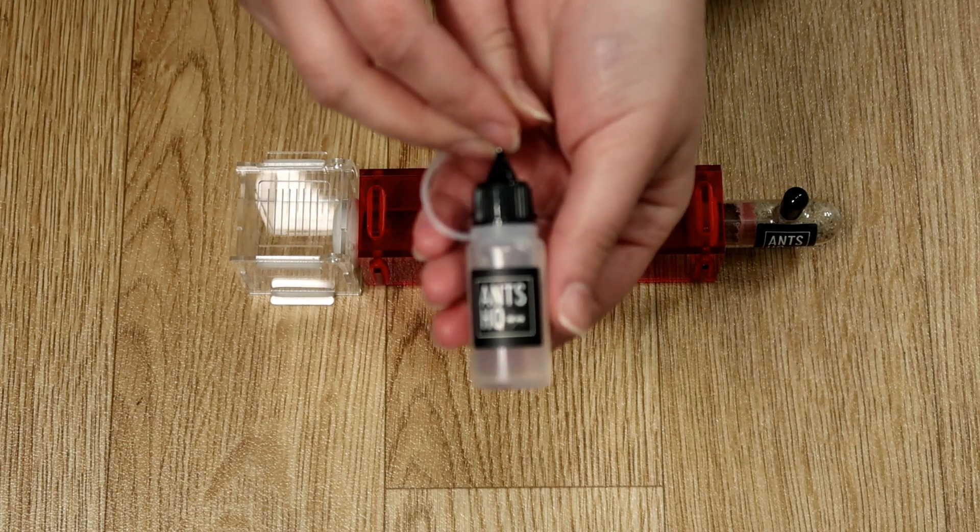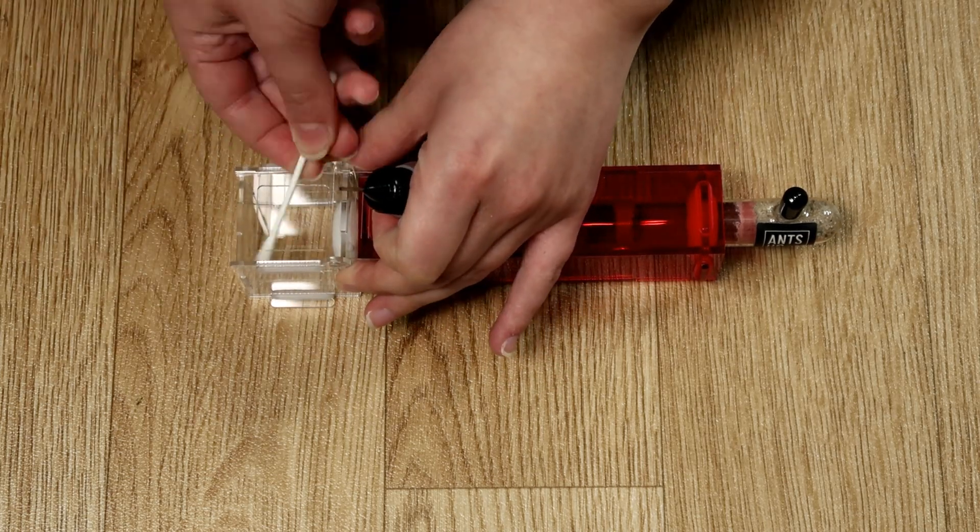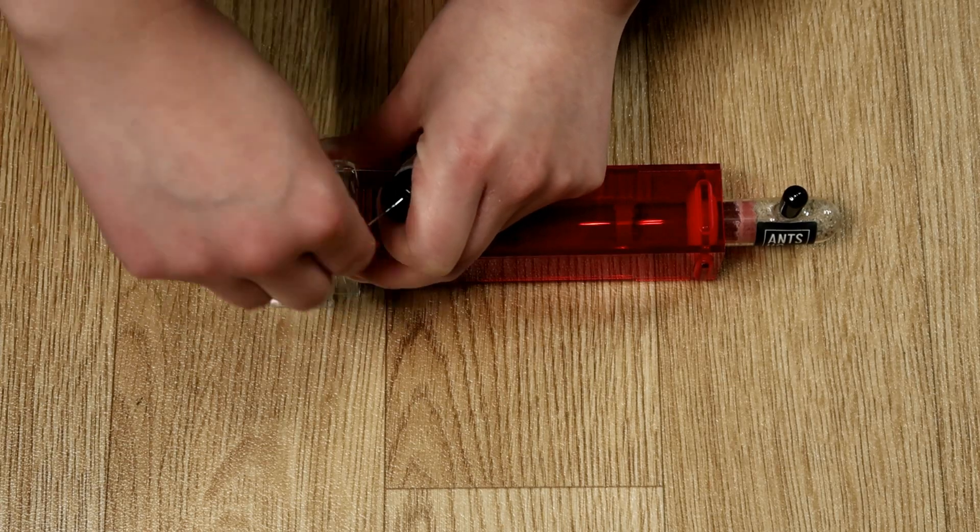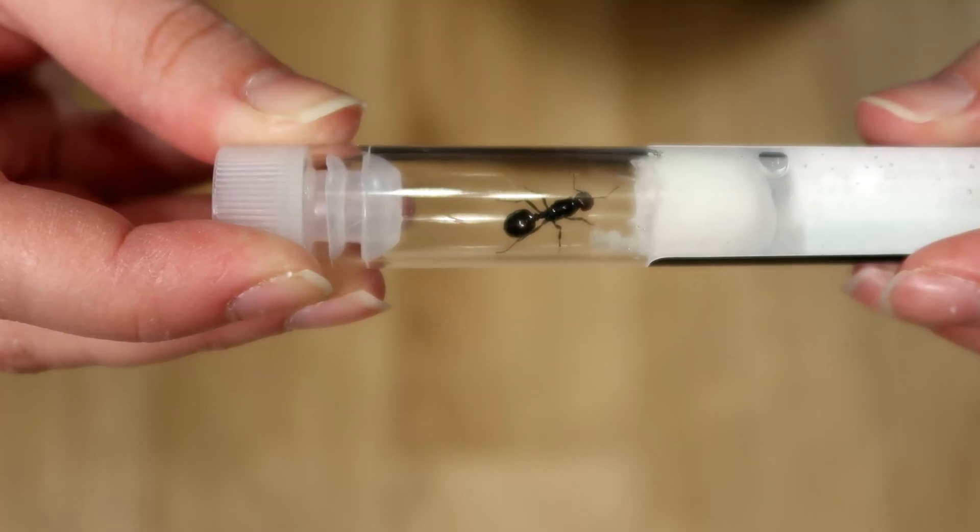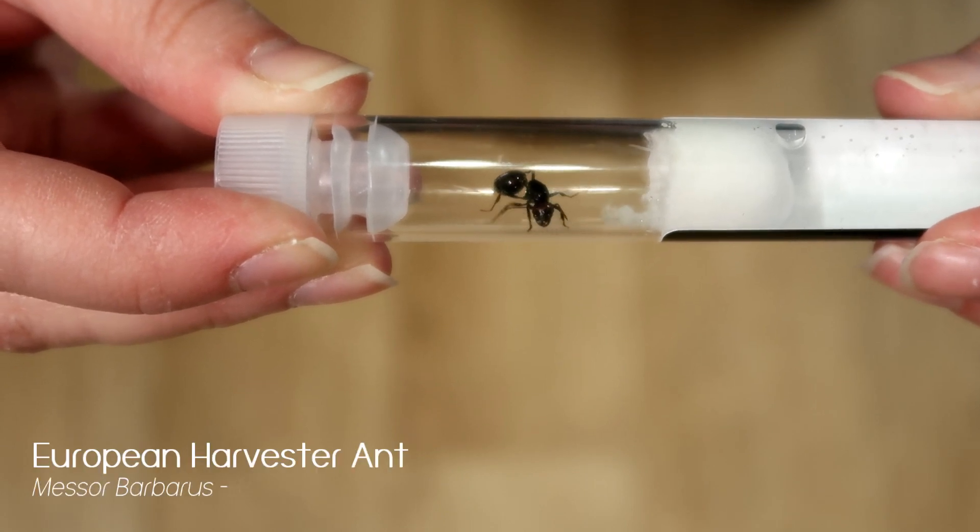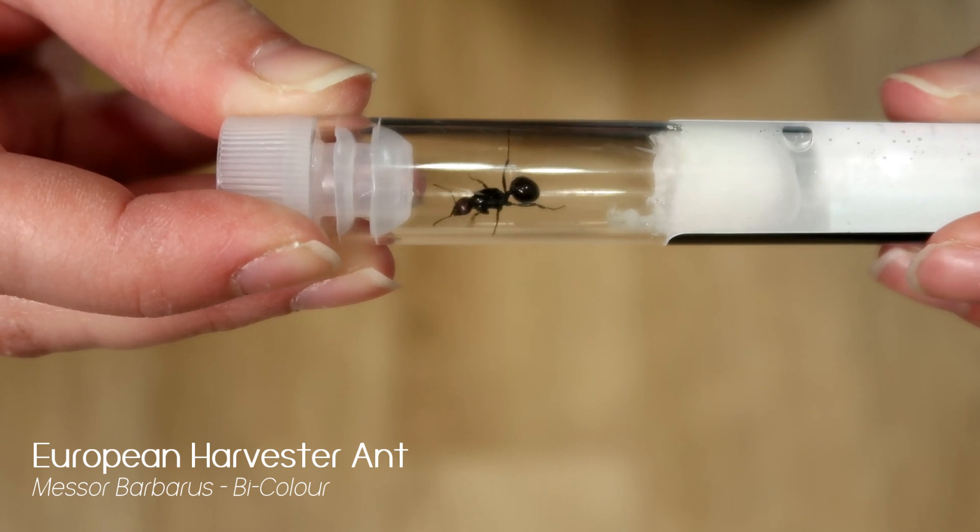First though, I'm going to add in this. So this is going to provide a little barrier so they can't walk too close to the lid because we don't want that. Now before we move her in, this is a queen. She's a bi-colour Mesa Barbarus so she has a red head and a slightly red abdomen.